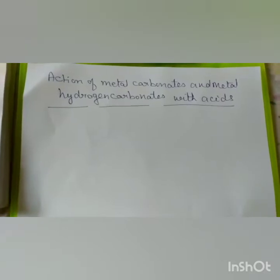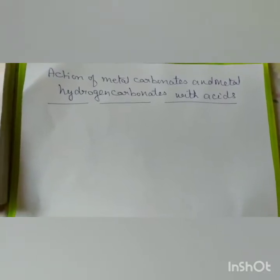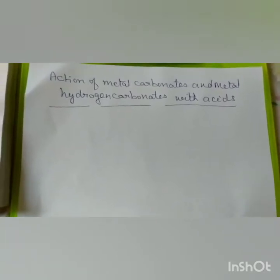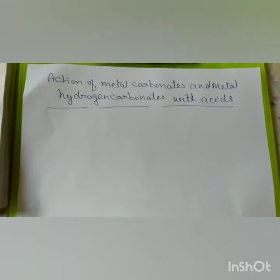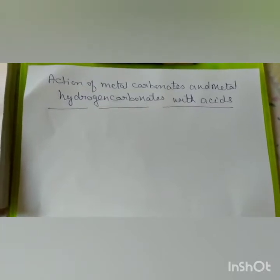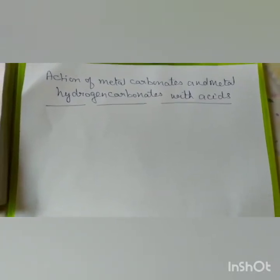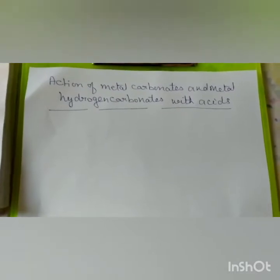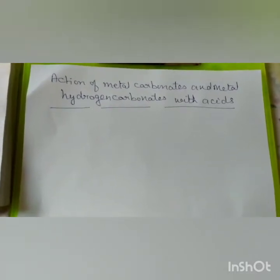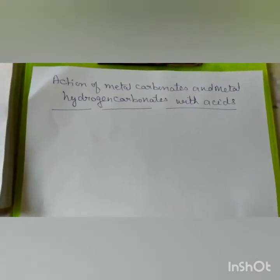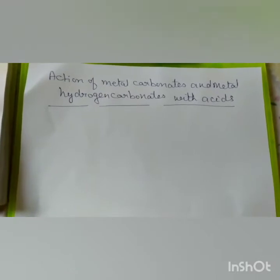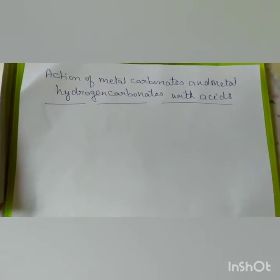Here you take two test tubes — test tube A and test tube B. In test tube A you take hydrochloric acid and add metal carbonate. In test tube B you also take hydrochloric acid and add metal hydrogen carbonate.